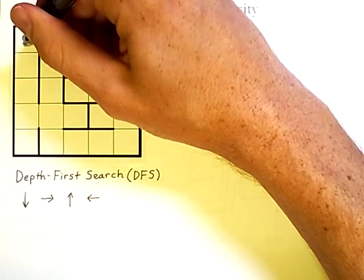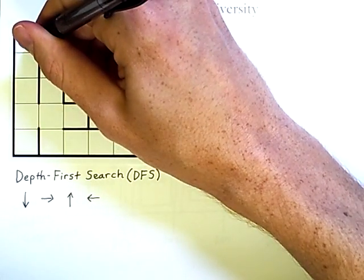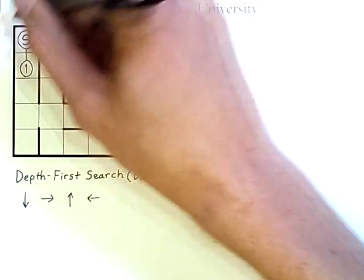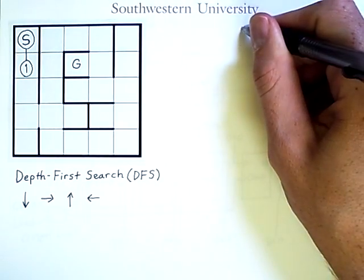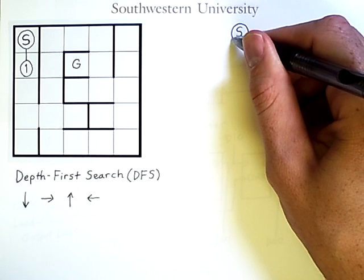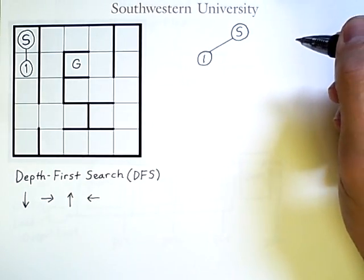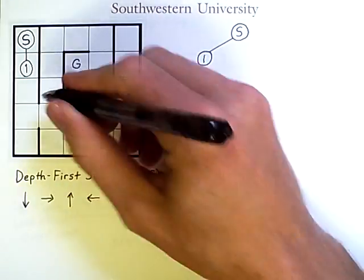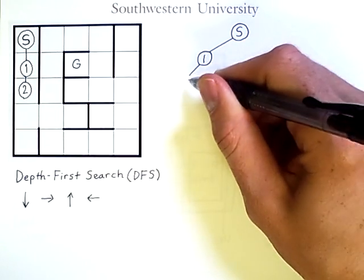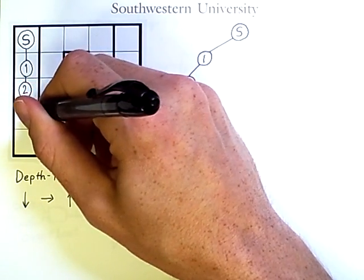From the first state, considering going down, we can move from here to here — that becomes the first node searched. While going through the maze, we'll also maintain a search tree. The root node of the tree is S, and the first branch leads to node 1. From node 1, going down again gives us node 2. Continuing down from there gives us node 3.